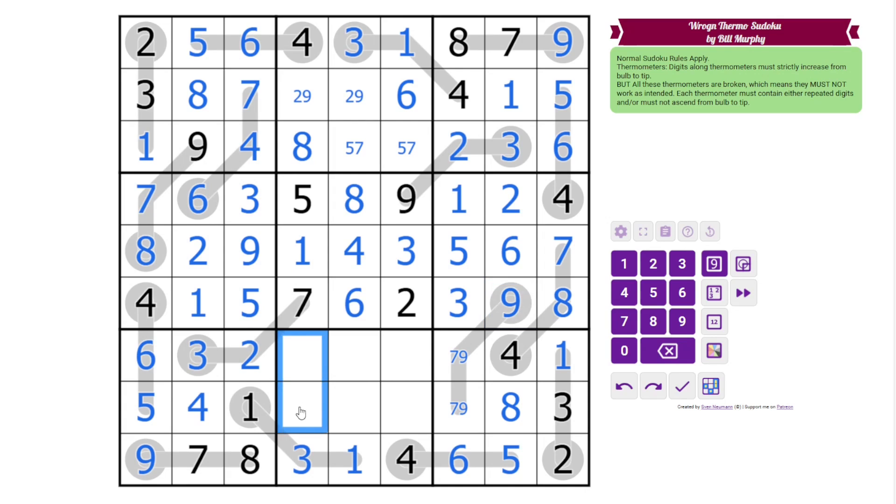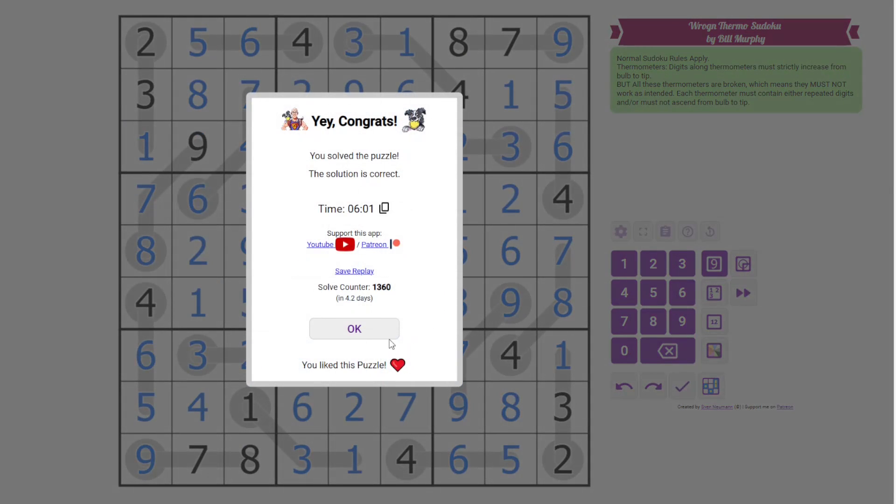This column still needs a 6, so it's got to go there. This is 2 or 9, but we have a 2 there. And that's going to resolve our 7, 9 here and our 9 and 2 here. These are 2 and 7, resolved by that 2. That resolves 7 and 5. And to finish off, 5 and 8. That's the solution.